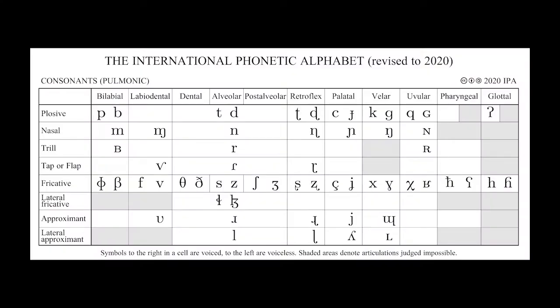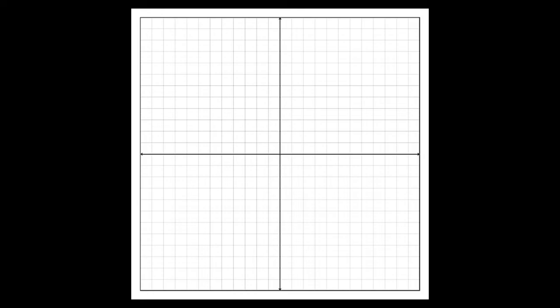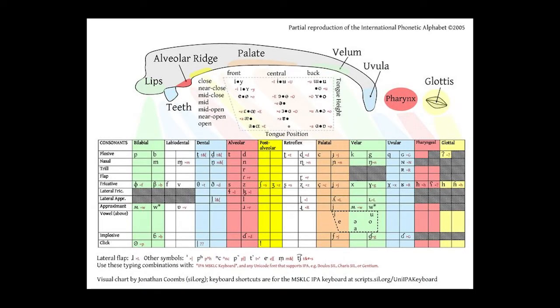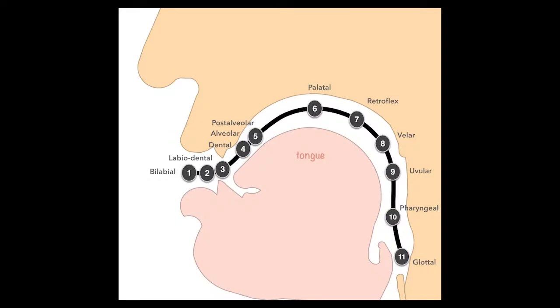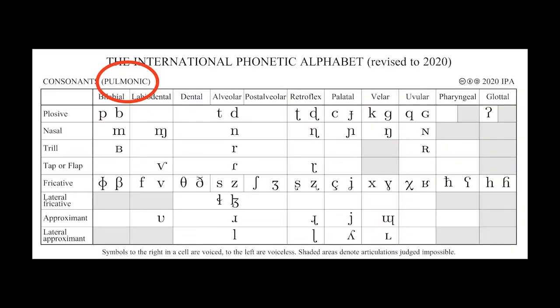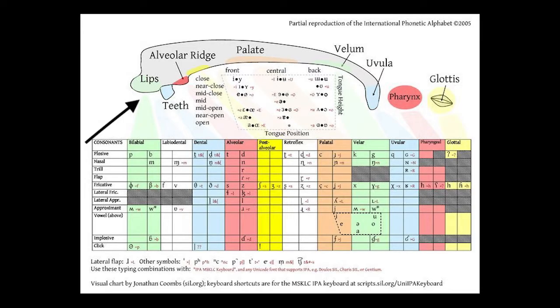This is the IPA pulmonic consonant chart. You can think of it as a coordinate chart that tells you what to do with your articulatory organs to make a particular sound. In spoken languages, your articulatory organs are the organs in your mouth, throat, and chest that you use to make sounds — in English, those include the tongue, teeth, lips, and lungs. These are called pulmonic consonants because they all involve the pulmones, Latin for lungs. On the left of the chart you have the labial sounds, made using both lips — think English P, B, and M.